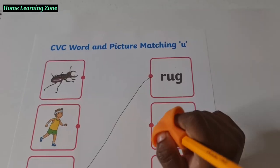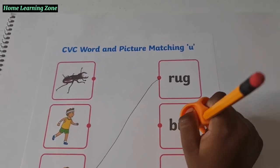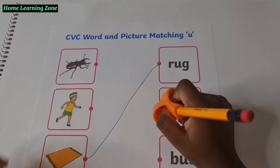What's the other one? Sound it out. B. U. G. Bug. Bug. Good job.